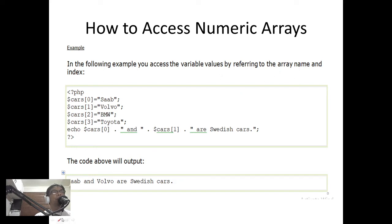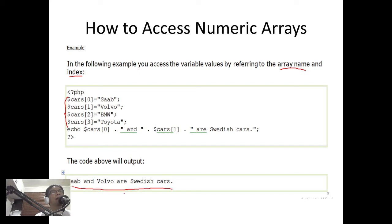To access numeric arrays, you refer to the array name and the index. In the example, we've created the array and then we have an echo statement with 'cars[0]'. So what is cars[0]? We are accessing the value stored at that particular index. Cars[0] is 'Saab', cars[1] is 'Volvo', cars[2] is 'BMW', and so on. So the output will display those values. We use the variable name and the index to access a numeric array.